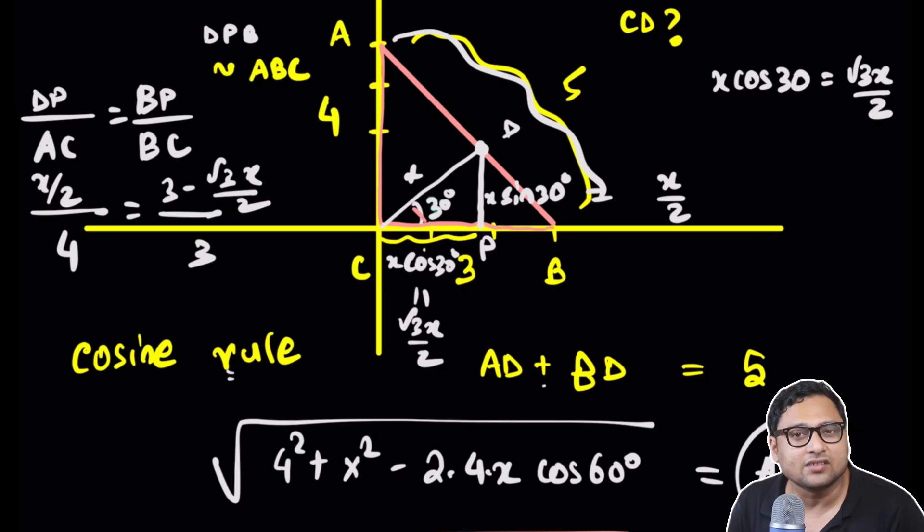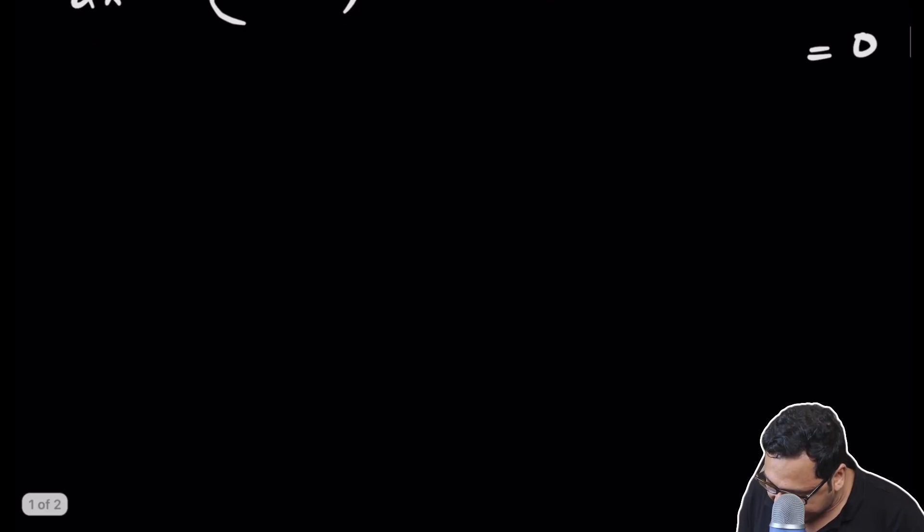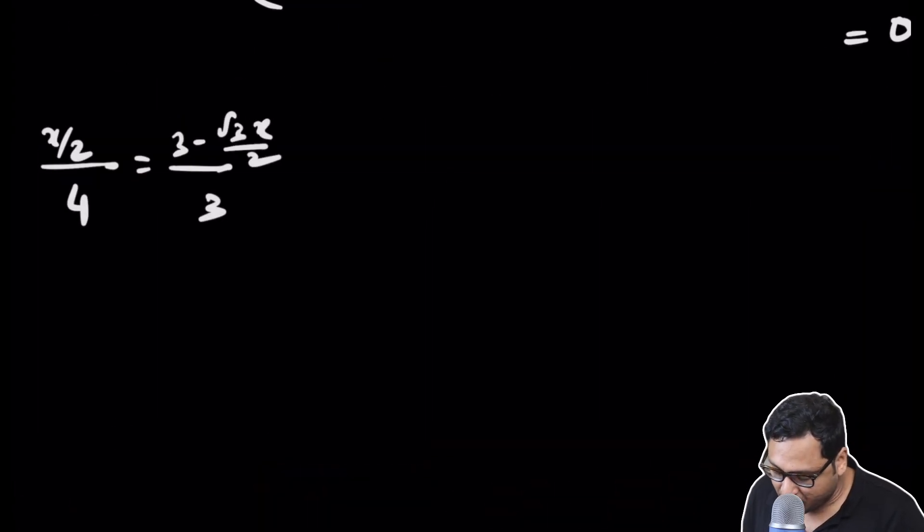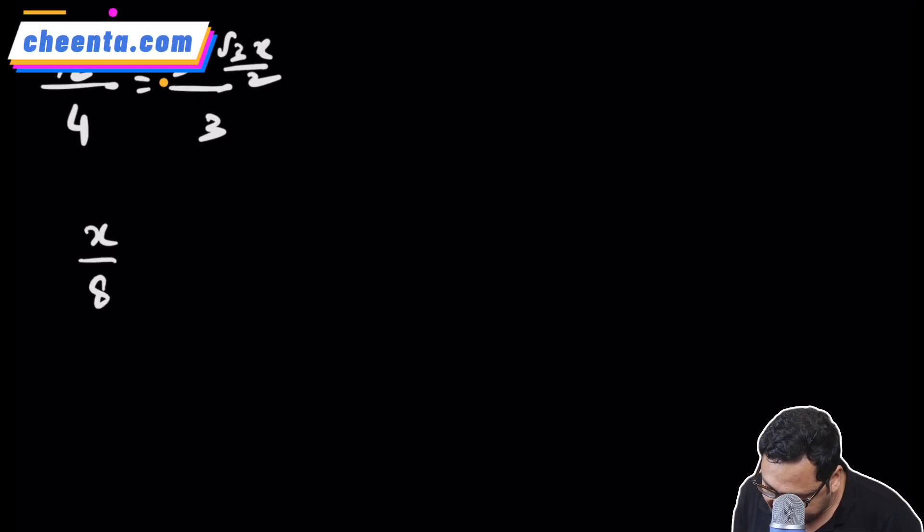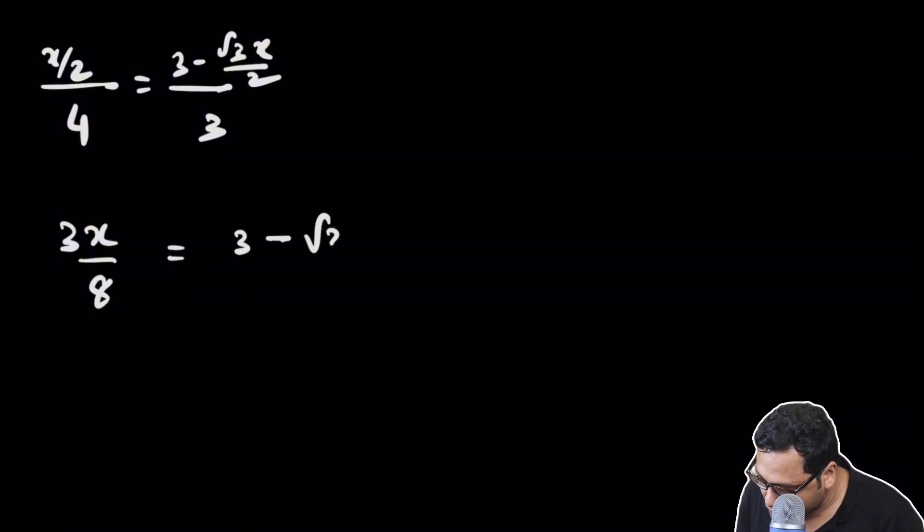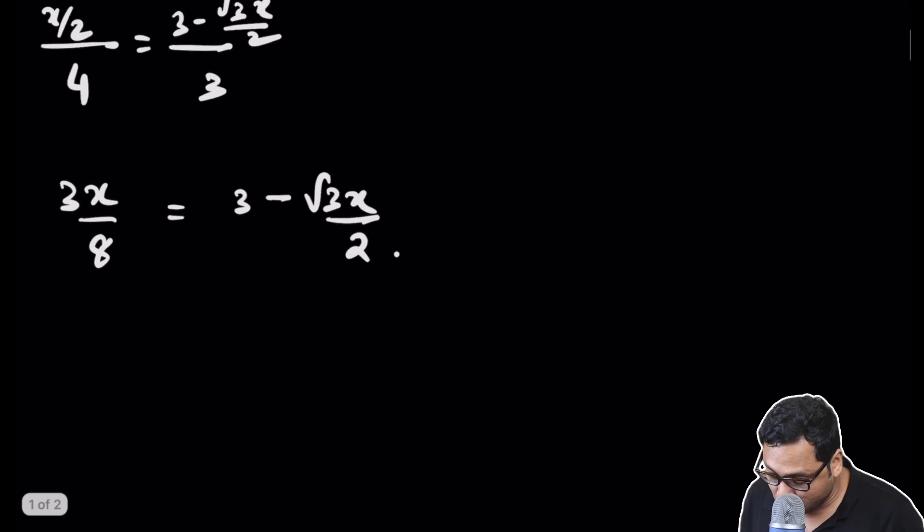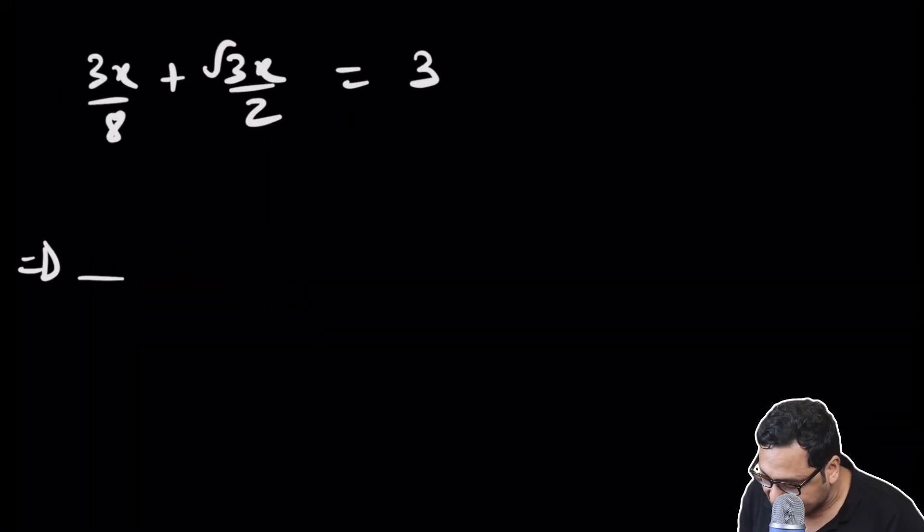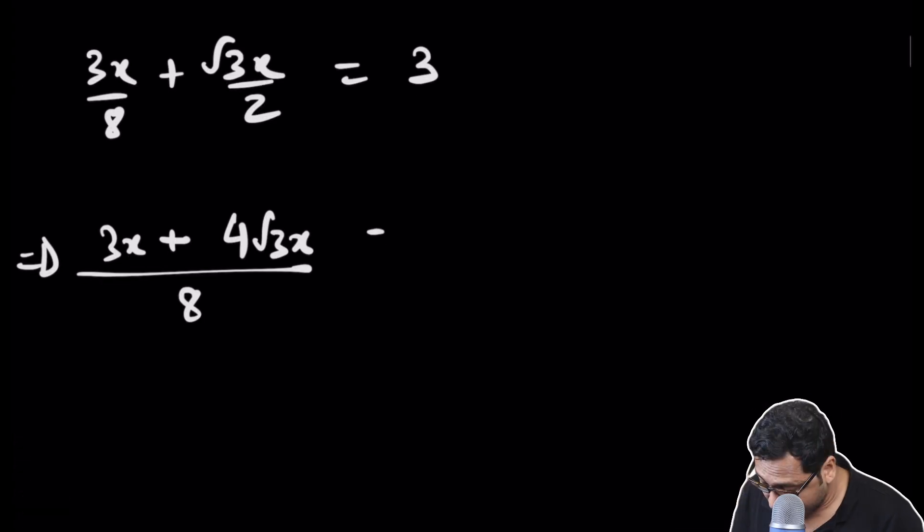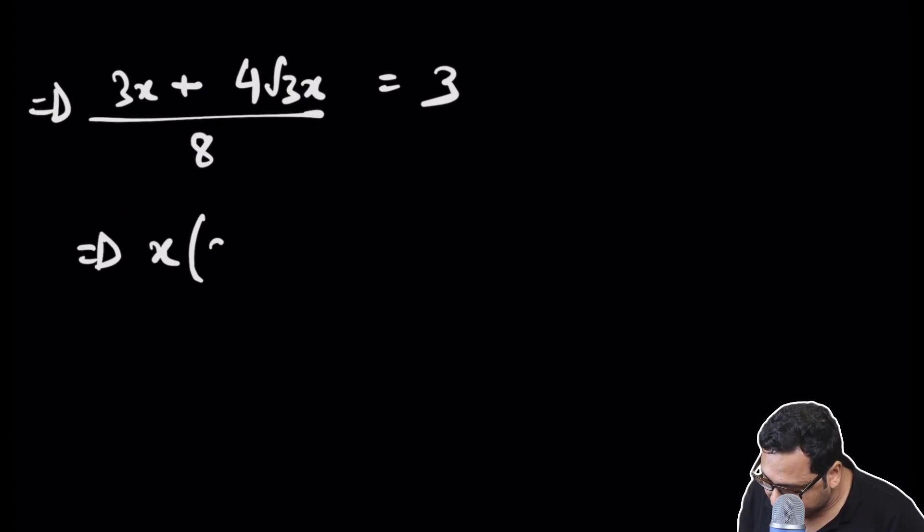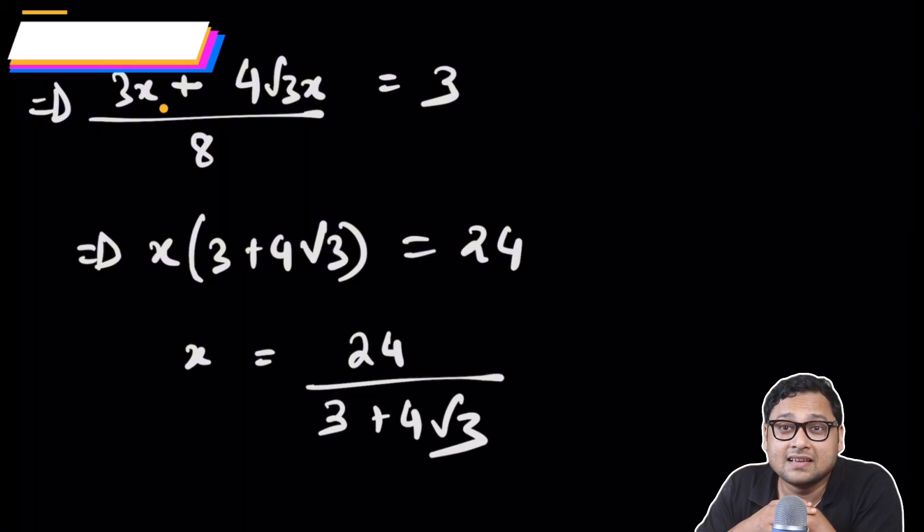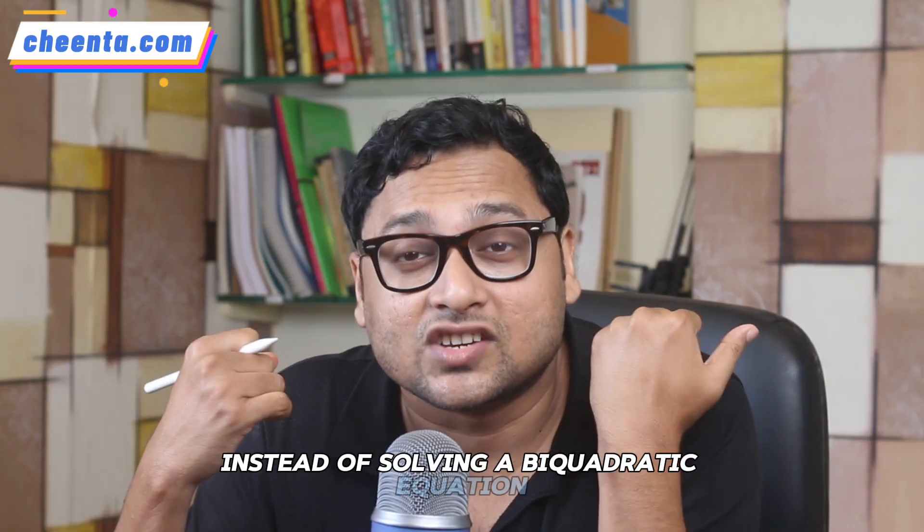A much simpler equation with a single power of X. It's a linear equation. You can easily solve this. If I cross multiply I will get 3X by 8 equal to 3 minus root 3X by 2. I bring all the X's to one side: 3X by 8 plus root 3X by 2 equal to 3. Taking the LCM which is 8: 3X plus 4 root 3X equal to 24. So X times (3 plus 4 root 3) equals 24, or X is 24 by (3 plus 4 root 3), and we are done.